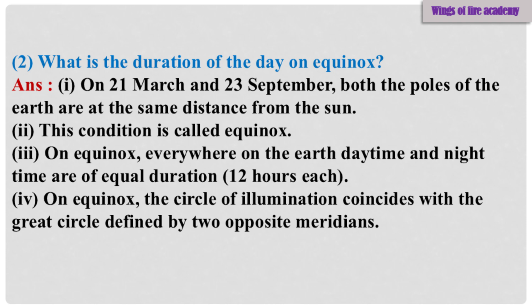Sub-Question 2: What is the duration of the day on equinox? Answer: 1. On 21st March and 23rd September, both the poles of the earth are at the same distance from the sun. 2. This condition is called equinox. 3. On equinox, everywhere on the earth daytime and nighttime are of equal duration — 12 hours each. 4. On equinox, the circle of illumination coincides with the great circle defined by two opposite meridians.